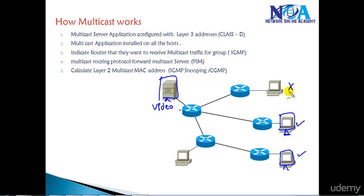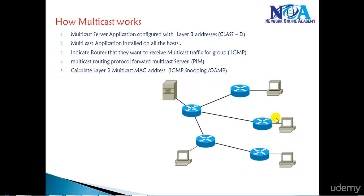Now in order to ensure that multicast traffic goes from this video server to the receiver, the first thing is the multicast server — the administrator needs to install a multicast application on the server using some layer 3 address, and that's what we call a Class D address.